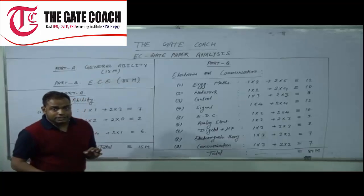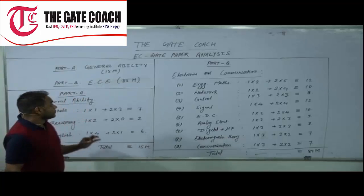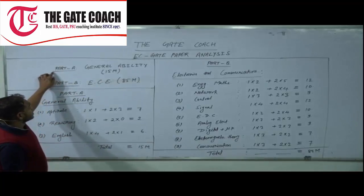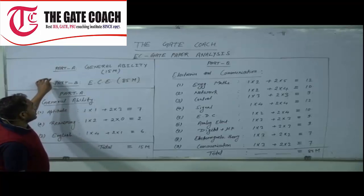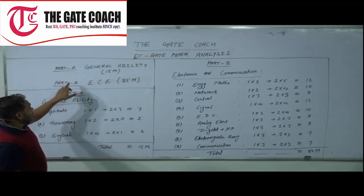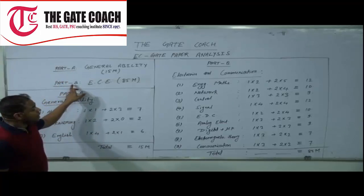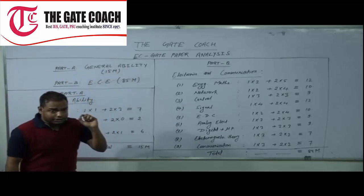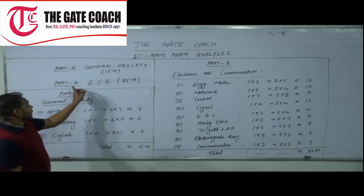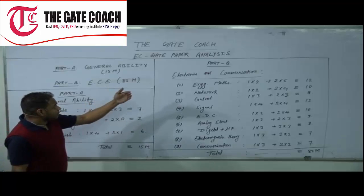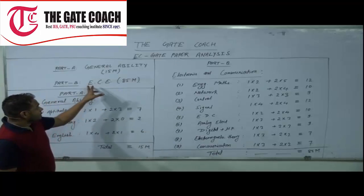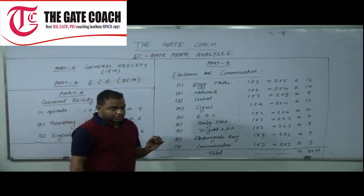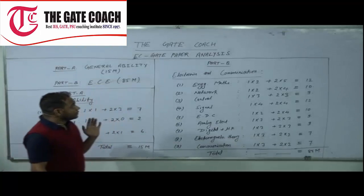First, in the introduction: the GATE paper consists of two parts — Part A and Part B. In Part A we have general ability, and in Part B the subject questions from the electronics and communication engineering department.